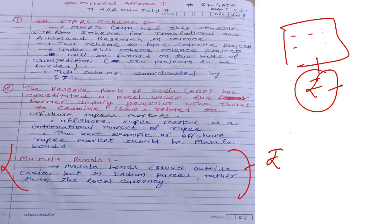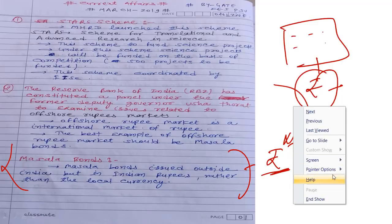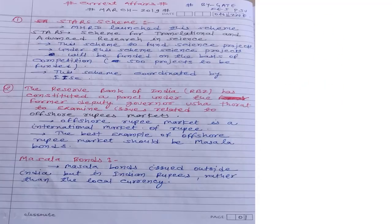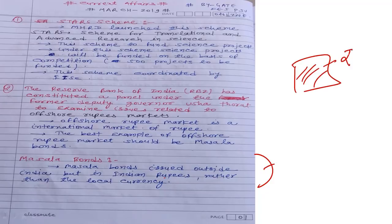Masala bonds are a specific type of international bond denominated in Indian rupees. If you are in America and want to buy masala bonds, you pay in rupees, not dollars. This increases the rupee's value outside Indian territory. All three terms — offshore rupee market, Usha Thorat committee, and masala bonds — are very important.